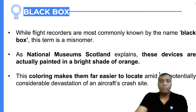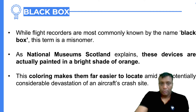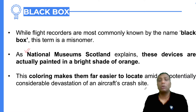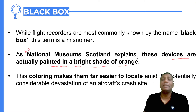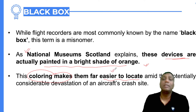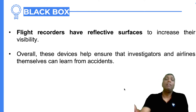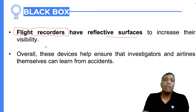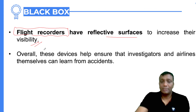So now you people understand what the black box actually is and all its components. One more thing — the National Museum of Scotland explains that the devices are actually painted in a bright shade of orange. This coloring makes them easier to locate. Black color would be very difficult to find, but with orange color it is very easy to locate. Flight recorders also have reflective surfaces to increase their visibility, making them even easier to detect.